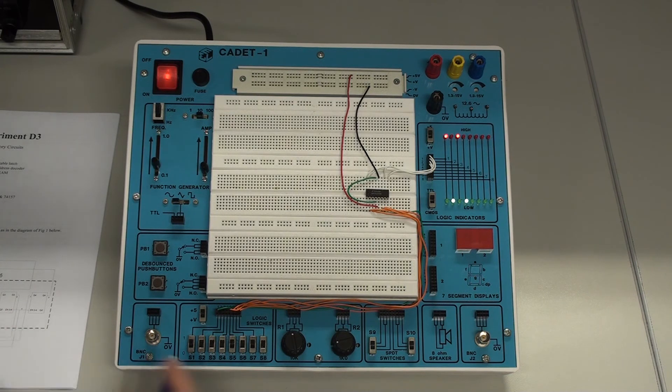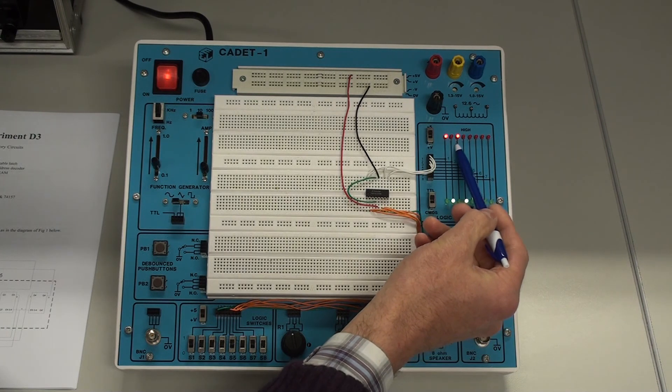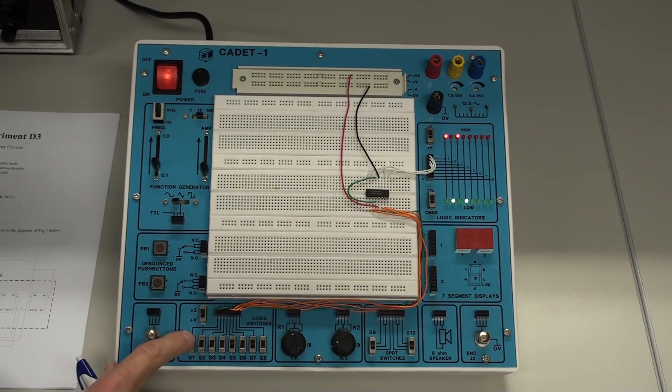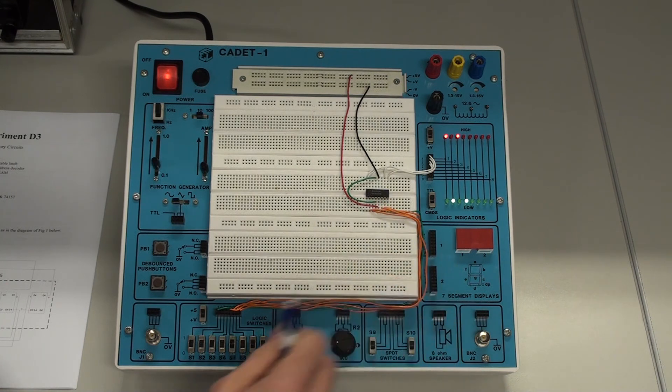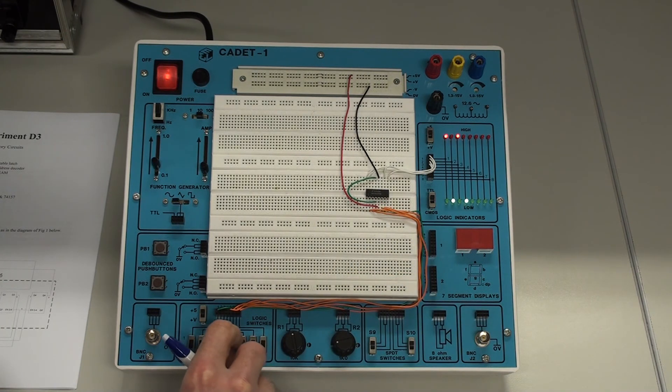So we're writing ten, the binary for ten into the latch. I set the enable line to zero. That's locking the information into the latch. So it's going to remember that. So regardless of what changes I make now in the switches, the information is stored in the latch.